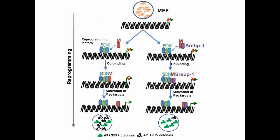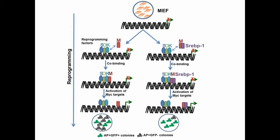So in summary, SREBP1 can interact with cMyc directly and strengthen the co-binding of Yamanaka factors to their sites, and facilitate the activation of cMyc targets, and then enhance iPSC generation. Thanks.